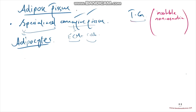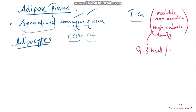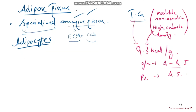Another feature of triglycerides is that they have a high caloric density, meaning per gram burned for energy they release more energy than glucose or protein. Triglycerides release around 9.3 kilocalories per gram, compared to glucose which releases around 4 to 4.5 kilocalories per gram, and proteins which release around 4.5 kilocalories per gram. So triglycerides release almost twice the energy of glucose and proteins.